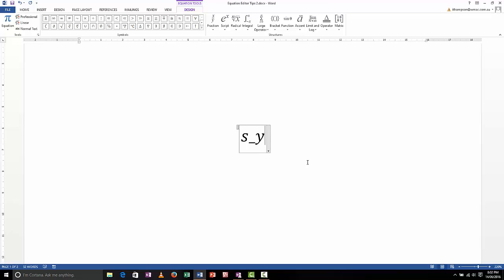s_y equals u sub y spacebar times t plus half spacebar to convert that into half a sub y spacebar t squared. How easy is that? All right, so that was last lesson, let's move on.